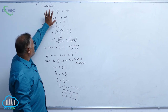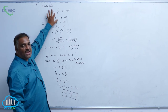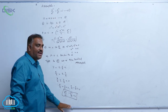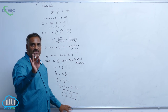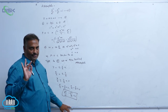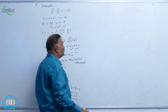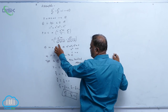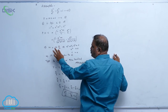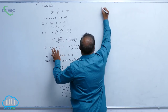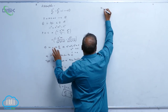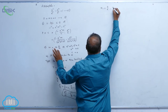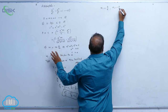We observe that the standard equation of the hyperbola and the asymptotes differ by a constant only. Here m = ±b/a — two values are there. So m₁ = b/a and m₂ = −b/a.